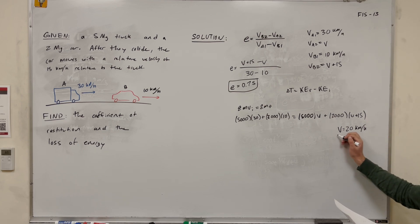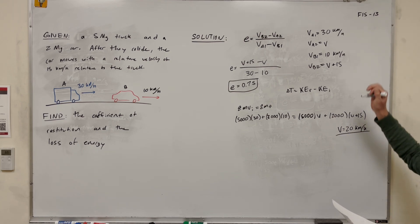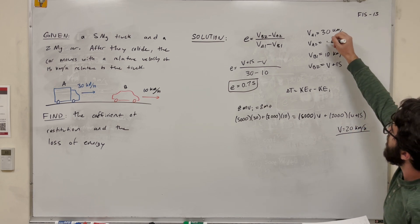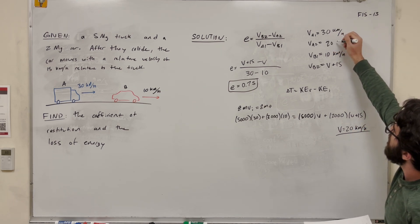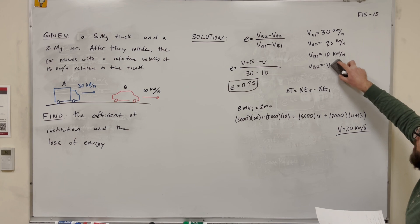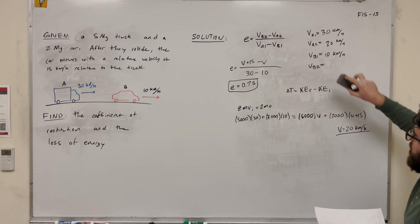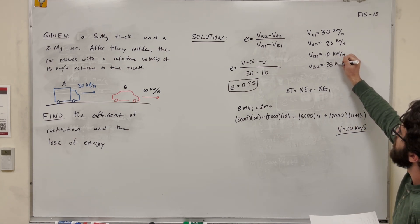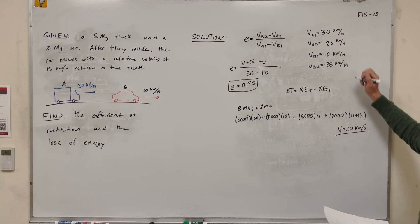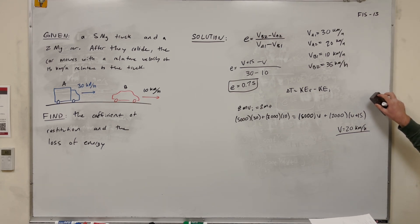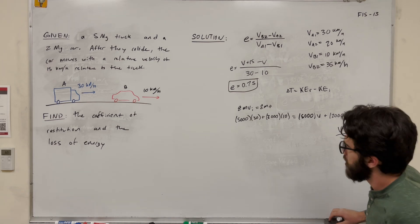Now that we know B is 20 kilometers an hour, we can go back and say that the truck's final velocity is 20 kilometers an hour, and the car's final velocity is 20 plus 15, which is 35 kilometers an hour. So now we have all the velocities.